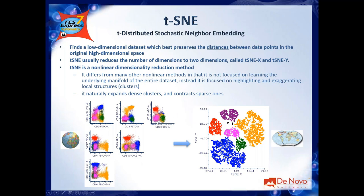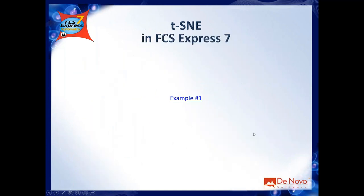What you can see at the bottom is an example. This is my dataset — a multi-parameter FCS file — and here is the tSNE representation I created. I used back-gating to show that you can highlight a population on standard plots and back-gate onto tSNE, or vice versa. Before going through all the tSNE options, I want to show you how to apply tSNE and what a tSNE plot looks like in FCS Express.